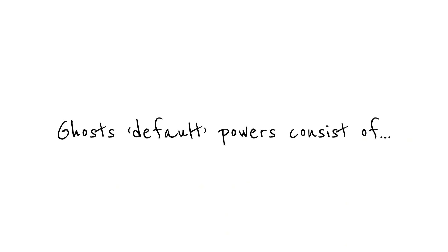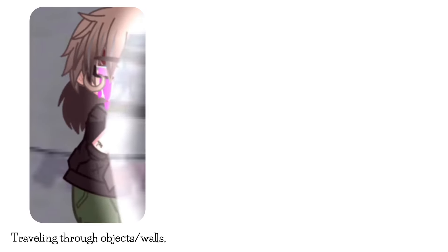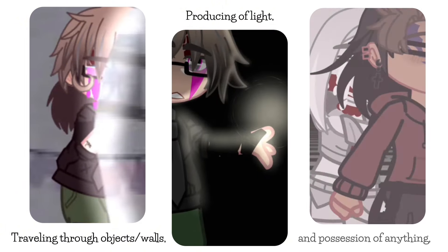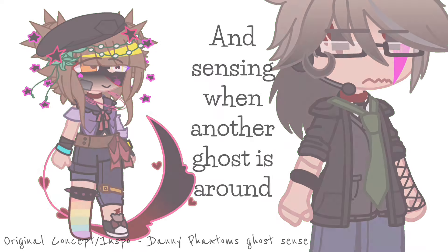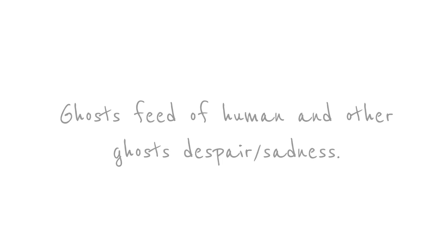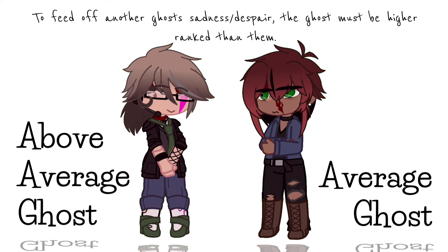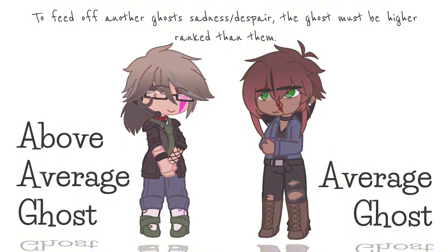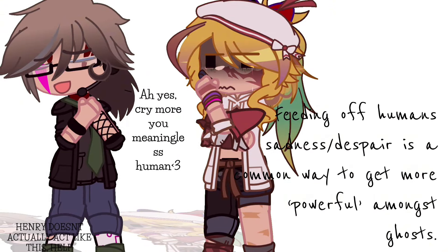Ghost default powers consist of floating — not flying, there's a difference — traveling through objects or walls, producing light, and possession of anything: humans, animatronics, objects, etc. Ghosts can also sense when another ghost is around. Ghosts feed off human and other ghosts' despair or sadness. This ties into human sacrifices and ghosts' deal making rules as well. To feed off another ghost's sadness or despair, the ghost must be higher ranked than them. Feeding off humans' sadness or despair is a common way to get more powerful amongst ghosts.